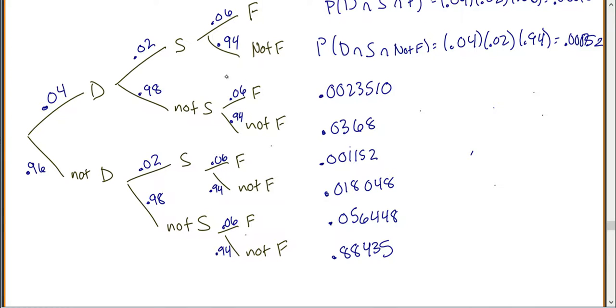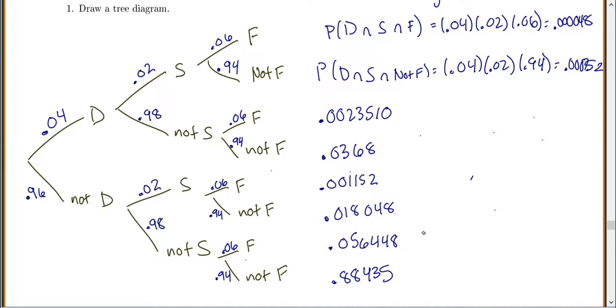These are the probabilities of each possible intersection. When you're doing a tree diagram, you do want to find the probabilities of all the intersections. Then we'll actually go into our steps after this and try and figure out what they actually want us to find. It's usually a step to find all of your possible intersections.